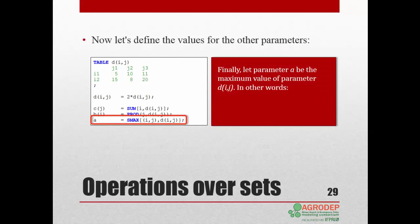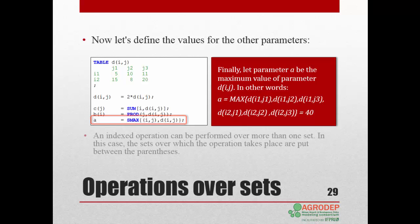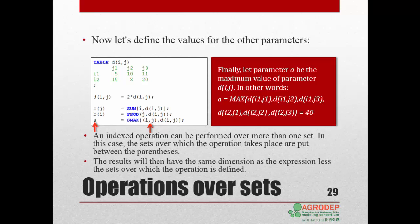Finally, let a parameter a be the maximum value of parameter dij. In other words, a will take the value of the element of dij with the highest value. Remember that each element of the table has been multiplied by 2. The resulting value is a 40. Again, an indexed operation can be performed over more than one set. In this case, the sets are put in parentheses and separated by a comma. The result will then have the same dimension as the expression, less the sets over which the operation is defined. So parameter a has zero dimension.